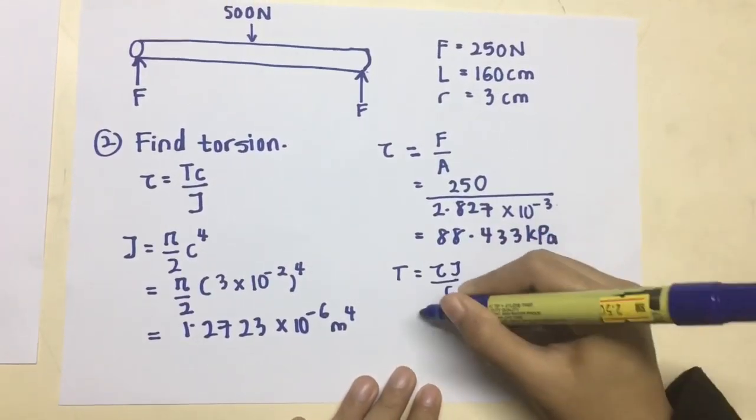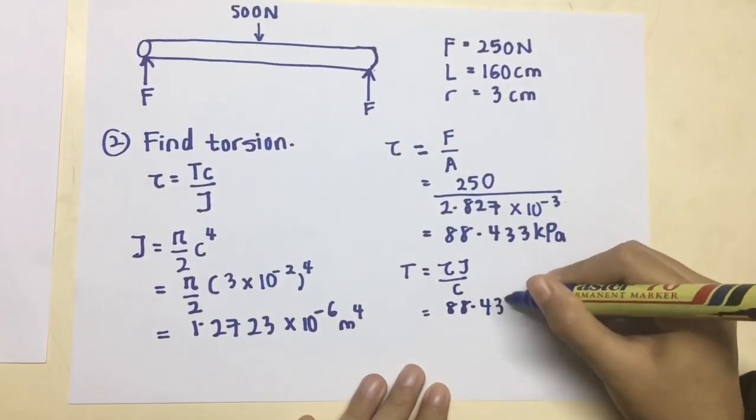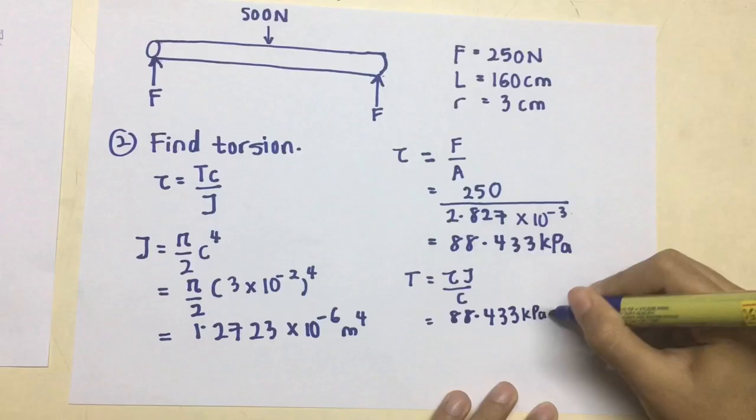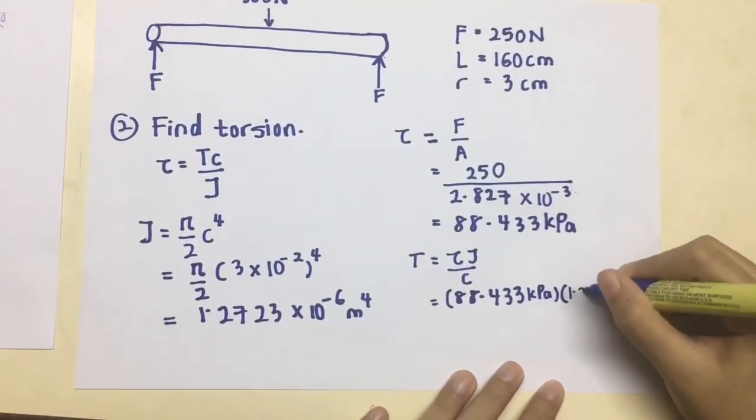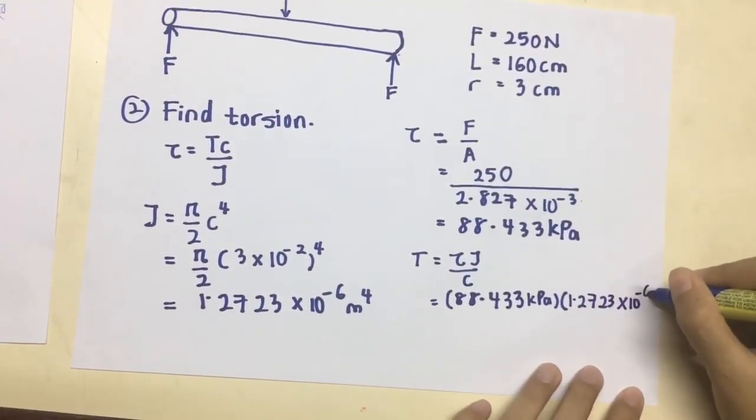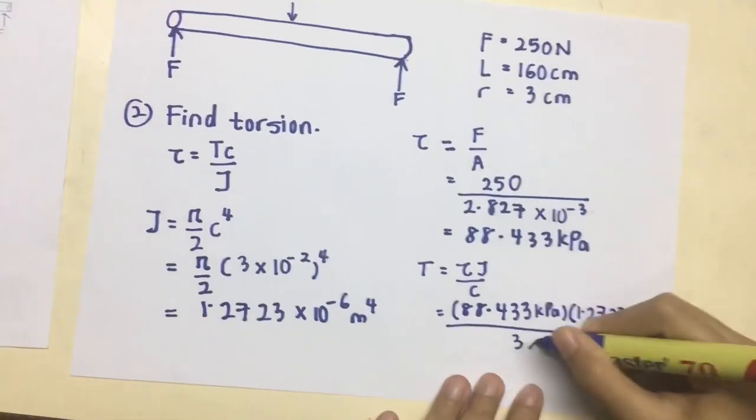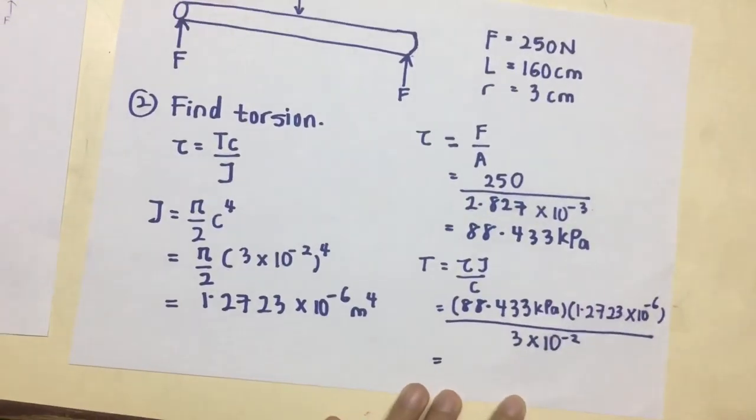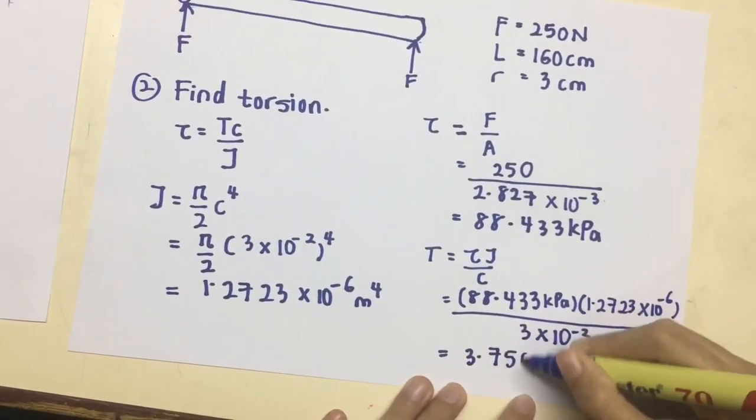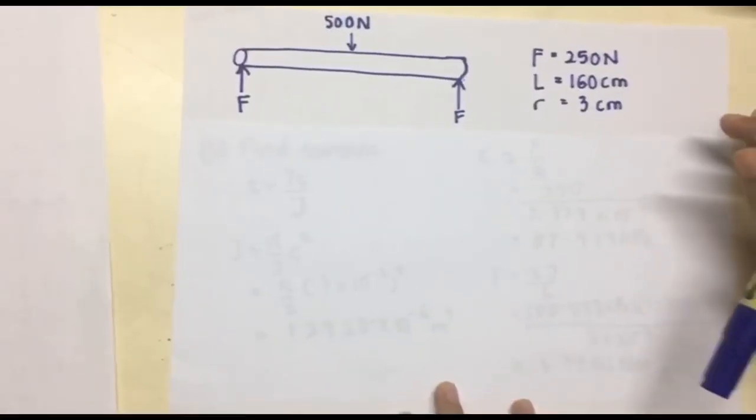So, if we rearrange the first formula, we can get T equals to tau J over C, and when we substitute all the values, we get the torsion, which is 3.7506 Nm.